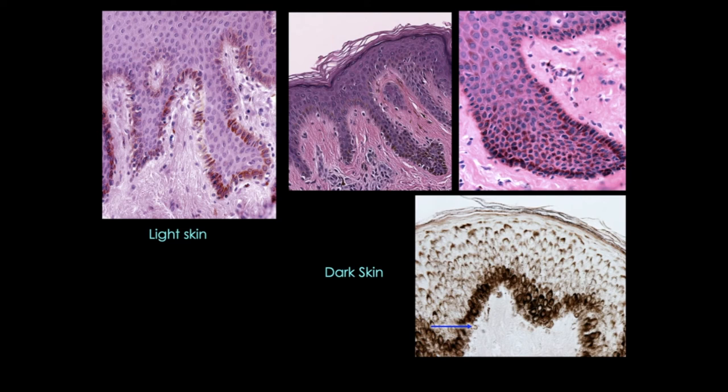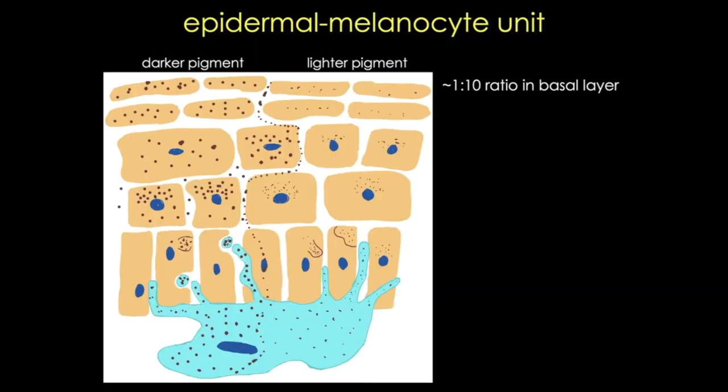We know that melanocytes interact with keratinocytes. Here I've drawn a typical epidermal melanocyte unit where the dendrites of the melanocyte extend between and contact the keratinocytes. The contact between those dendritic processes of the differentiated melanocyte and the keratinocytes is necessary for the melanin transfer into the keratinocytes. This is what determines skin color and is involved in photoprotection.